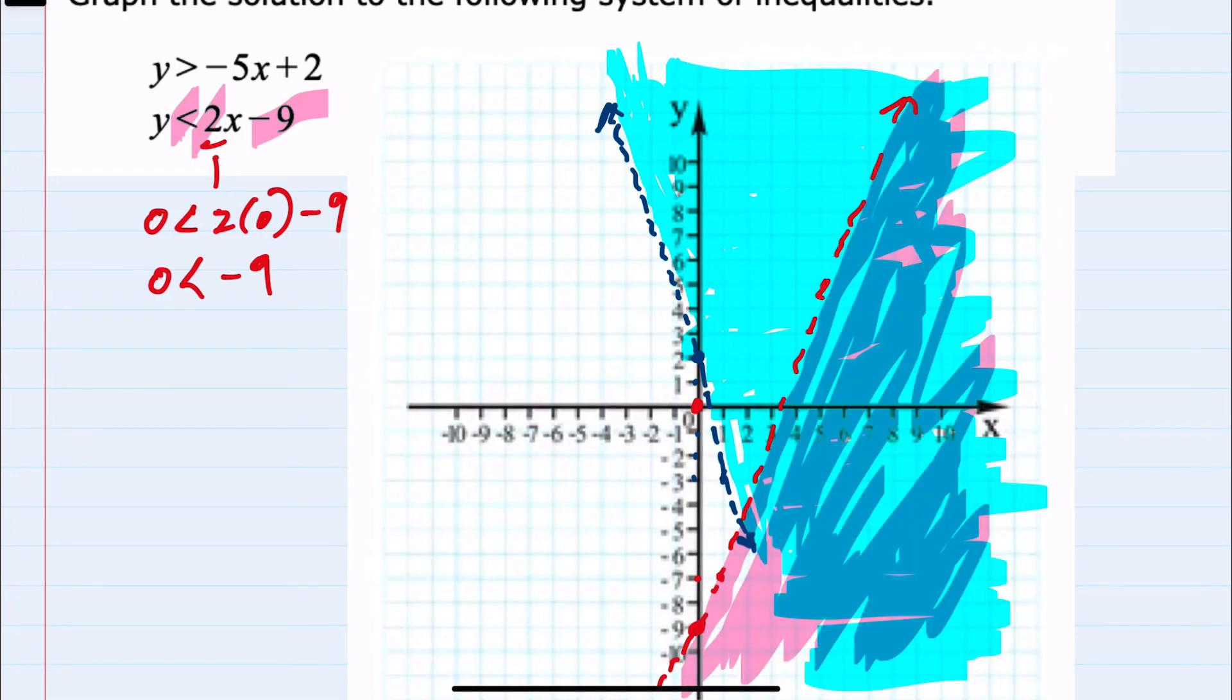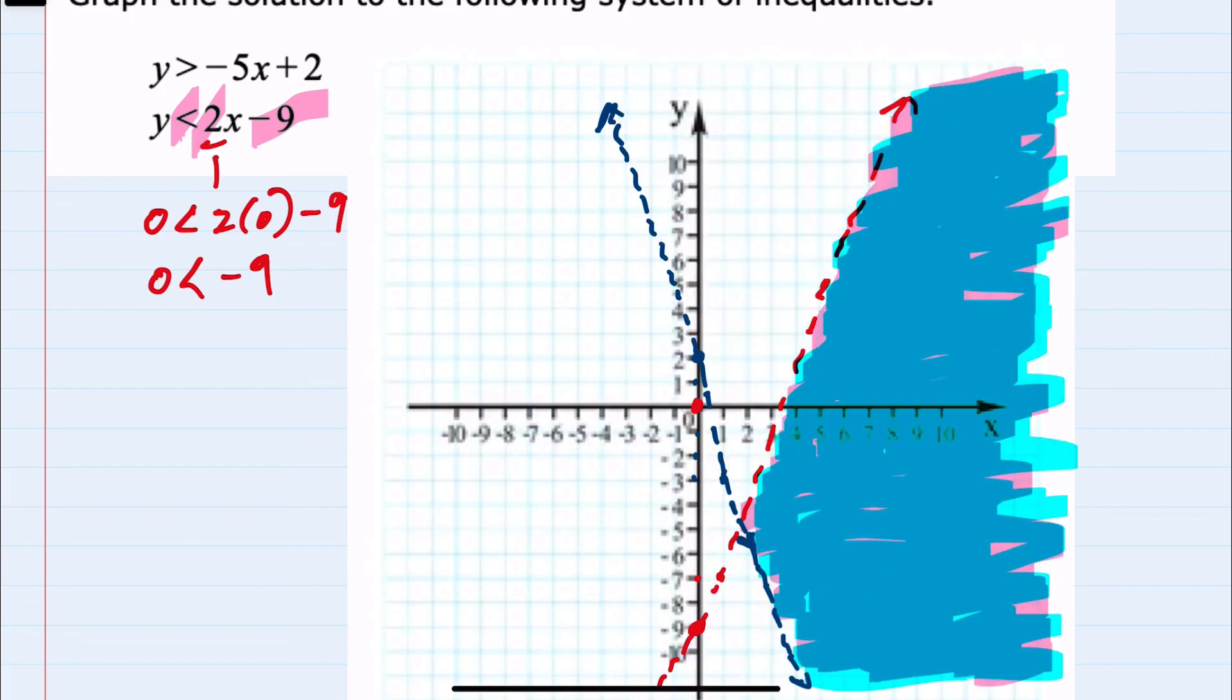So when looking for our final solution for the graph of this system of inequalities, we would want to show where both of these exist. So this would be where these regions overlap. I'm going to remove the regions where they do not overlap just by erasing. And we can see that the overlap region is this corner of the intersection.